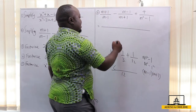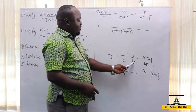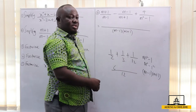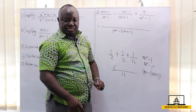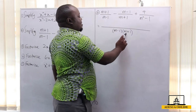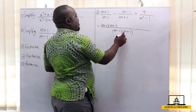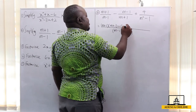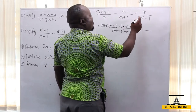So our LCM is (m-1)(m+1). For the first term (m+1)/(m-1): the LCM divided by (m-1) leaves (m+1), so we multiply numerator (m+1) by (m+1). For the second term (m-1)/(m+1): the LCM divided by (m+1) leaves (m-1), so we multiply numerator (m-1) by (m-1). For the third term 4/(m²-1): (m-1)(m+1) divided by (m-1)(m+1) gives 1, so we have 1 times 4, giving us 4.